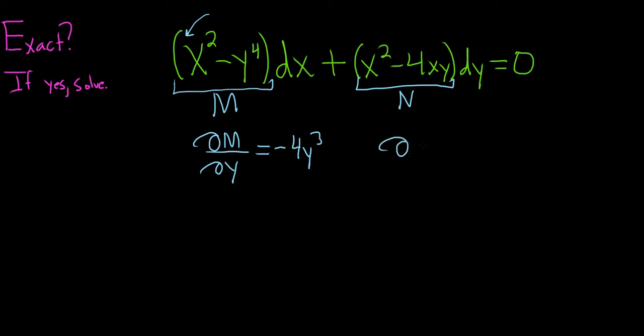Over here we compute del N, del X, and again it's just the other variable, really easy memory trick. When you compute this, you treat all of the Y's as constants. So the derivative of X squared will be 2X.